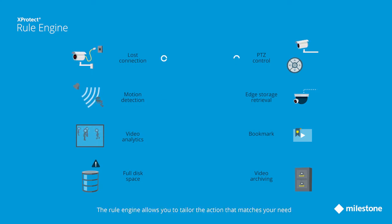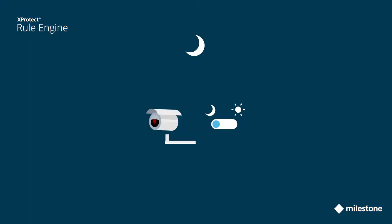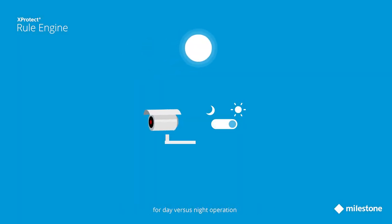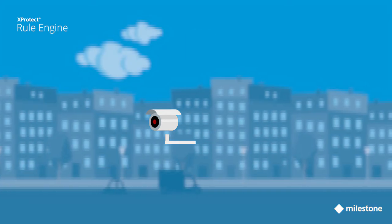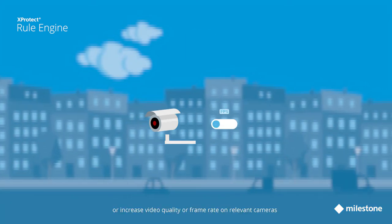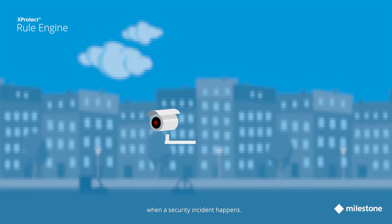The rule engine allows you to tailor the action that matches your need and apply it to a specific event. For instance, you might want to optimize camera settings for day versus night operation, or increase video quality or frame rate on relevant cameras when a security incident happens.